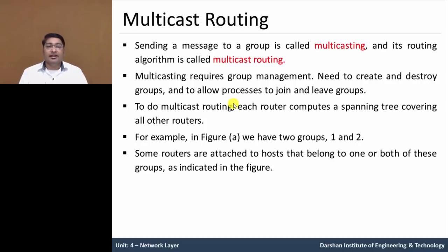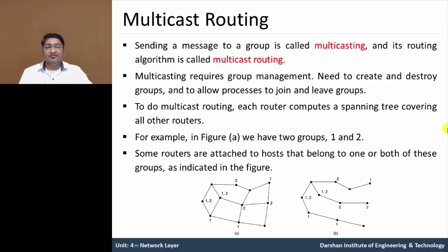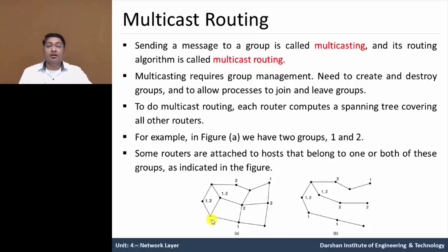For example, in the figure there are two groups: group 1 and group 2. Some routers are attached to hosts that belong to one or both of these groups, as indicated in the figure. In figure A, this node uses both group 1 and group 2, so when group 1 sends a message it is received, and when group 2 sends a message it is also received. But one node receives only group 1 messages, while another node receives only group 2 messages.